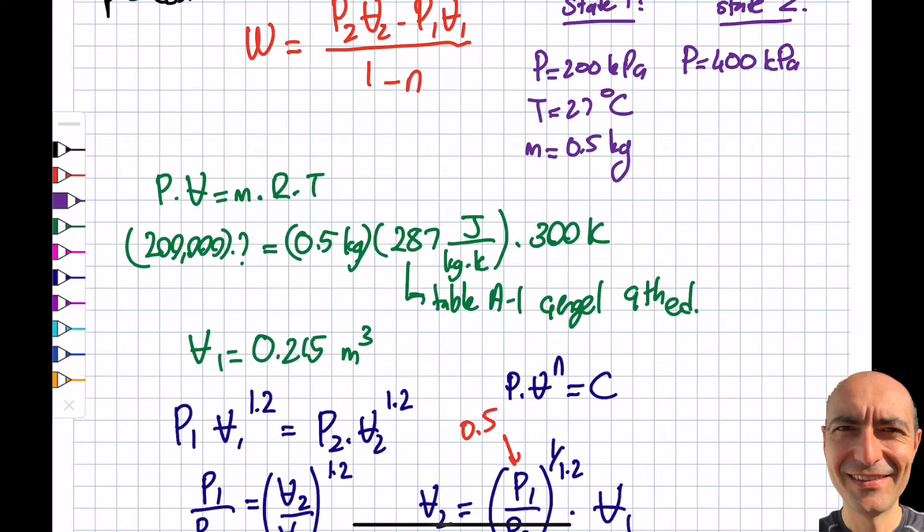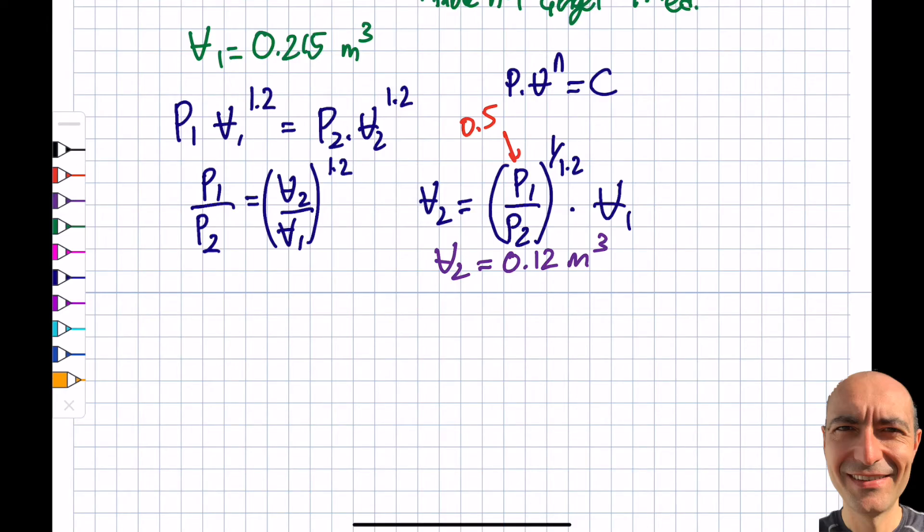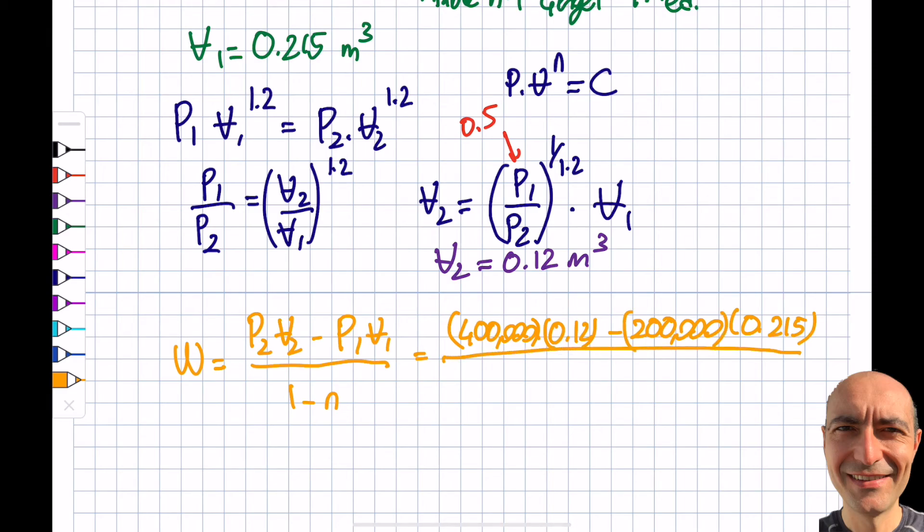The rest is smooth sailing from here. I simply know everything that I need to. W will be equal to P2 V2 minus P1 V1 by 1 minus n. This is 400,000 times V2 is 0.12 minus 200,000 times V1 is 0.215 divided by 1 minus 1.2. If I find this into the calculator, I get myself minus 25,000 joules, or minus 25 kilojoules. This is how much energy I have to put into this particular process to create this polytropic compression.